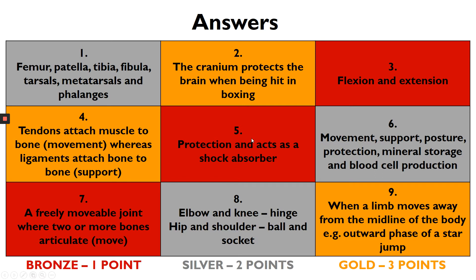Question five: the job or jobs of cartilage. Different types of cartilage have different jobs, but generally cartilage is there to protect the end of a bone and also act as a shock absorber. And then question seven: the definition of a synovial joint. A synovial joint is a freely moveable joint where two or more bones meet, or where two or more bones articulate, which is basically another word for move.